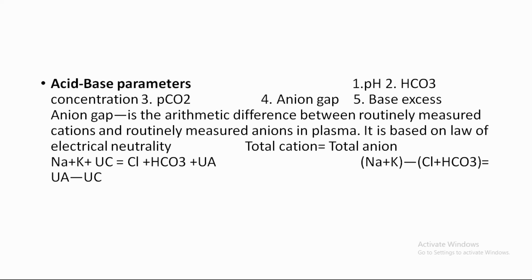The anion gap — also called the NIM gap — includes pH, bicarbonate, partial pressure of carbon dioxide, and NIM gap. Routinely tested plasma electrolytes used to calculate the anion gap include sodium, potassium, chloride, and bicarbonate.